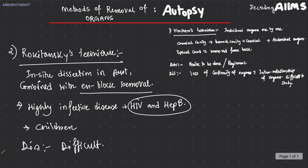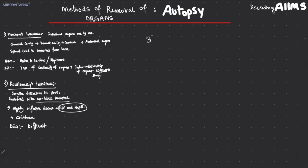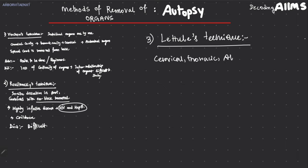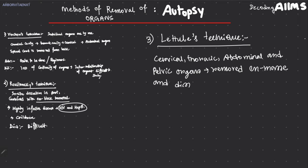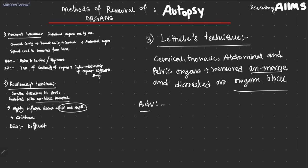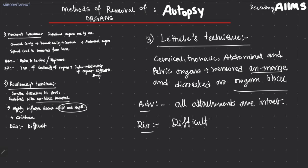The disadvantage of Rokitansky's technique is it is very difficult to perform. The third technique is known as Letulle's technique. In this technique the cervical, thoracic, abdominal, and pelvic organs are removed en masse and dissected as an organ block. The advantage is that all attachments are intact, so the inter-relationship between the organs is preserved. The disadvantage is the organs are very difficult to handle.